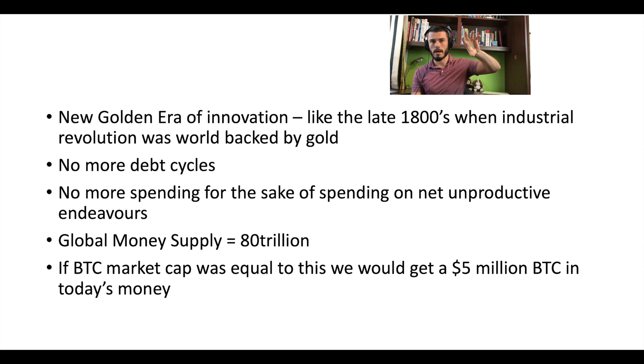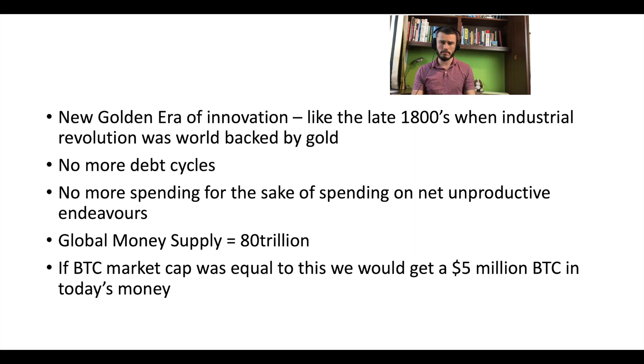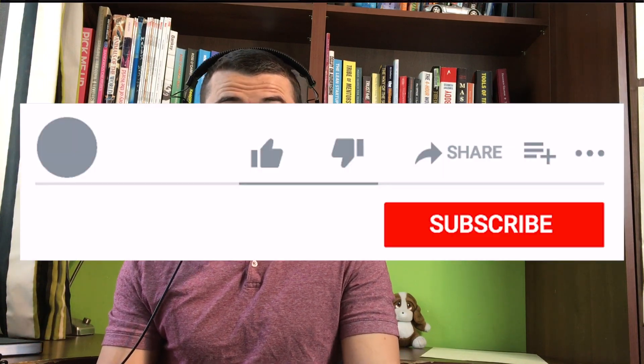So how do we get to the five-million-dollar prediction? If we take all the money currently in the world — in banks, bank accounts, pockets, under mattresses — the global money supply is roughly $80 trillion. If all that value had to be backed by Bitcoin, and there are only 21 million Bitcoin, then 21 million multiplied by $5 million equals $80 trillion. In today's dollars, that gives us $5 million per Bitcoin if Bitcoin becomes a global reserve currency — and that's how we arrive at the five-million-dollar figure using fundamental analysis.